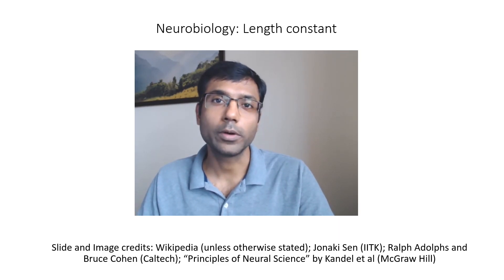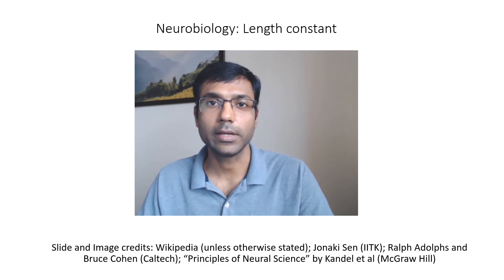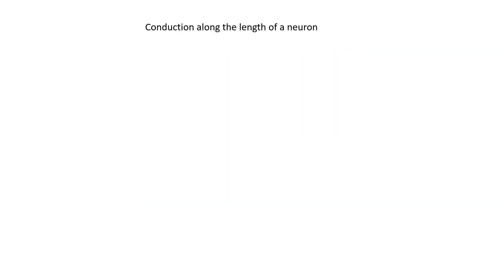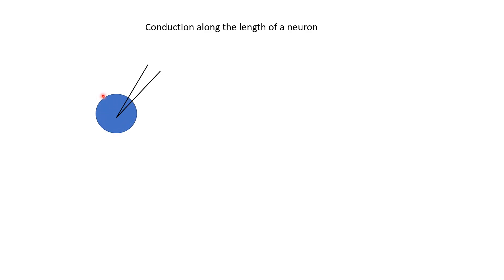In this video, we are going to look at a similar quantity known as the length constant of a branch of a neuron. We have been talking about membrane potential in the last few videos, and we have made an assumption that the membrane potential is identical at different parts of the neuronal membrane. Effectively, we assumed the neuron has a small, sphere-like body and the membrane potential at every point is identical. When we inject current into a neuron, we assumed the membrane potential will rise equally at different parts of the membrane.